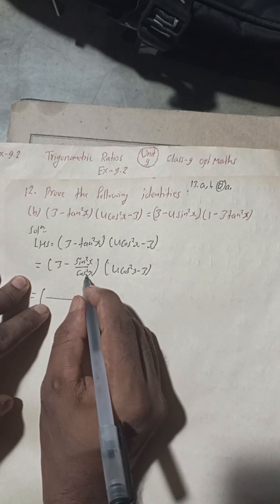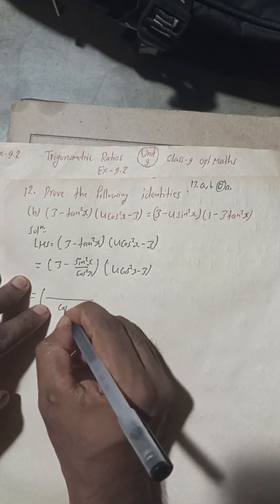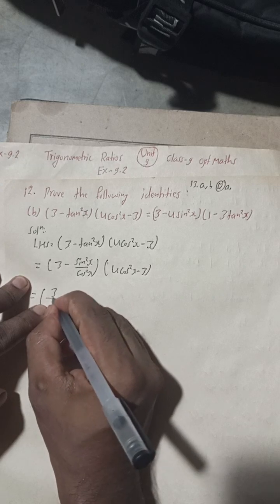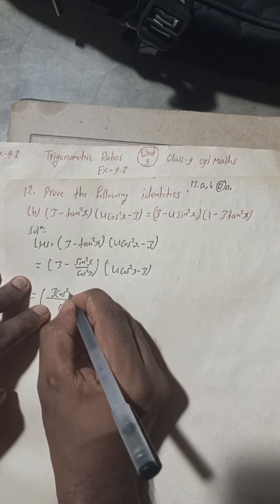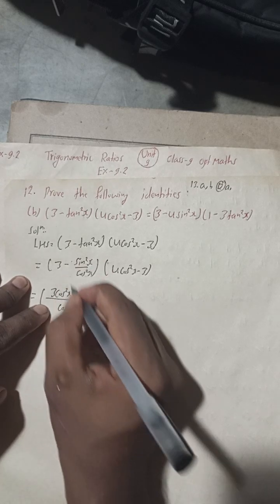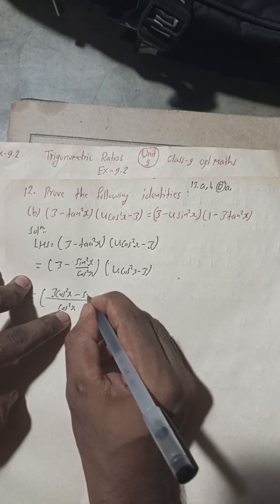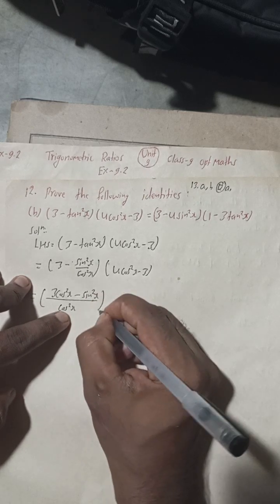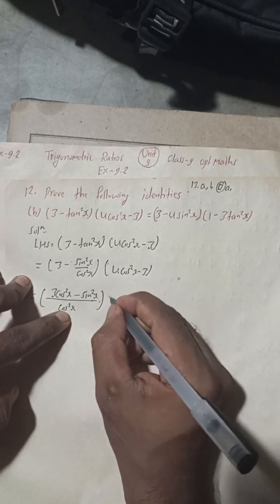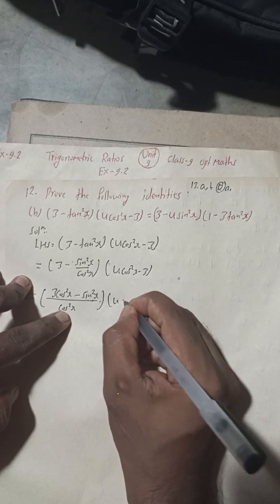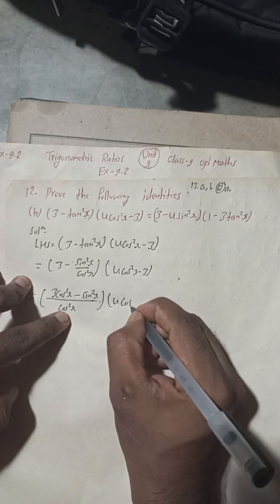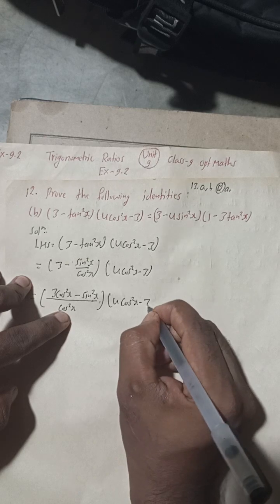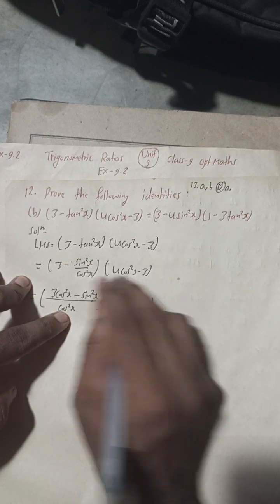Taking cos²x as the LCM and multiplying through, the numerator becomes 3cos²x minus sin²x. The second bracket (4cos²x - 3) remains as it is.